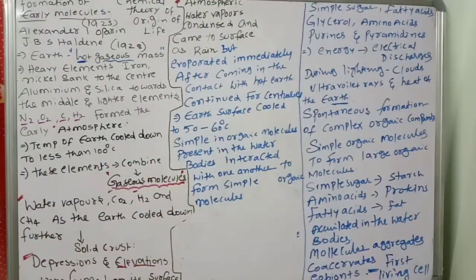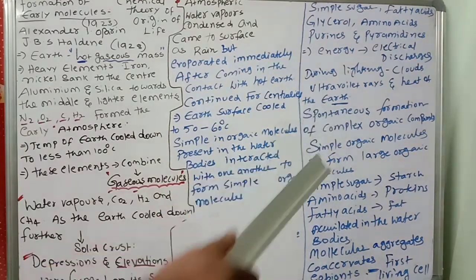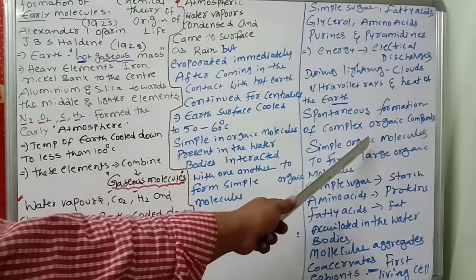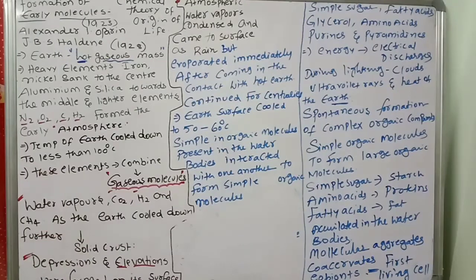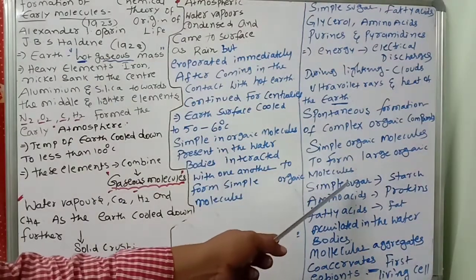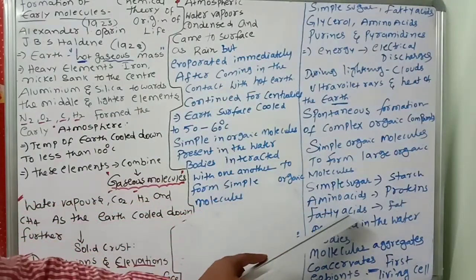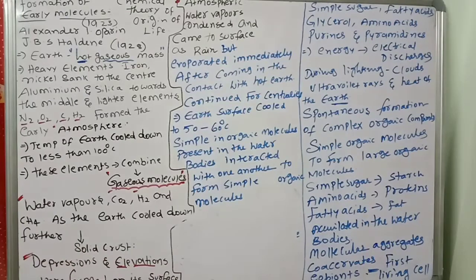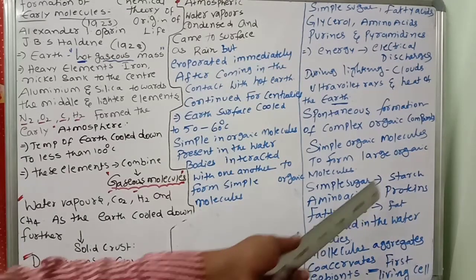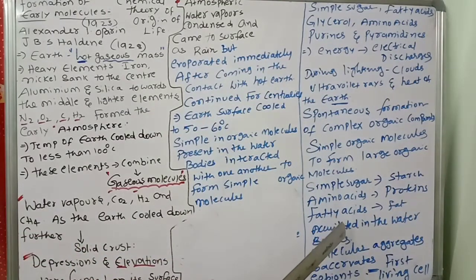Spontaneous formation of complex organic compounds: simple organic molecules combined to form large organic molecules. For example, simple sugars converted into starch; amino acids converted into proteins; fatty acids converted into fat. They all accumulated in the water bodies — starch, proteins, fats — then formed molecular aggregates.